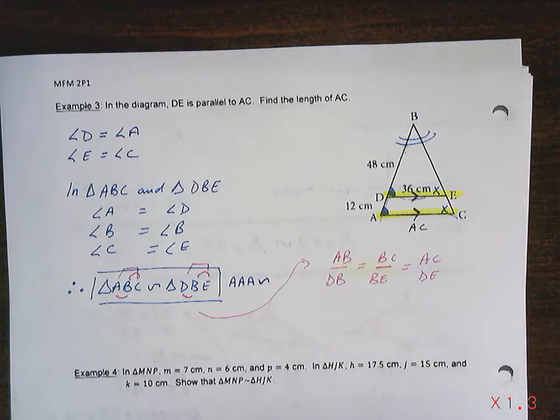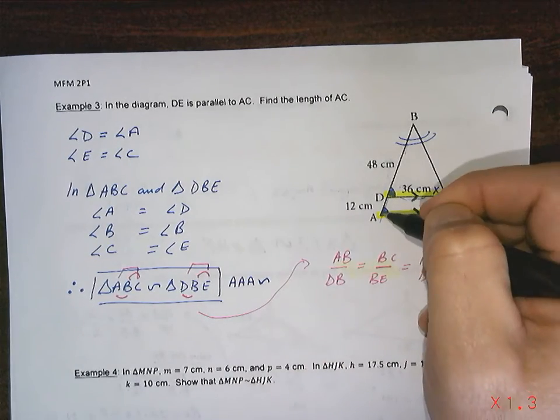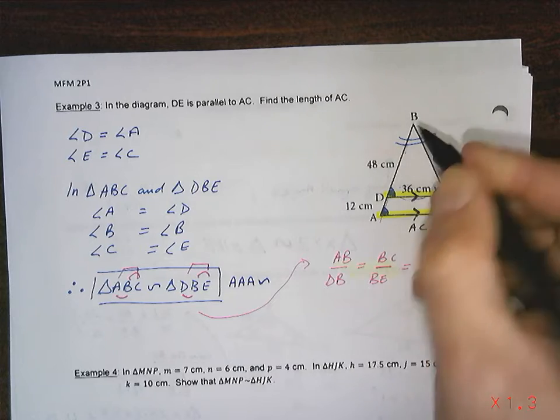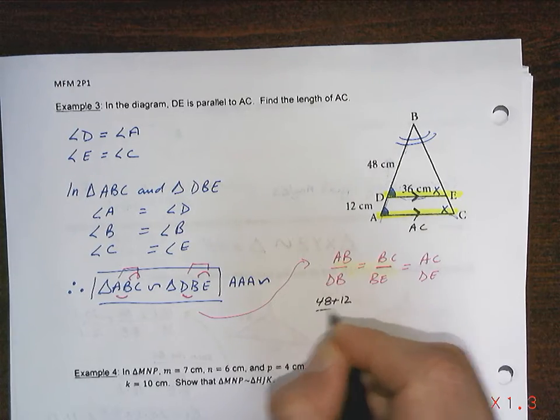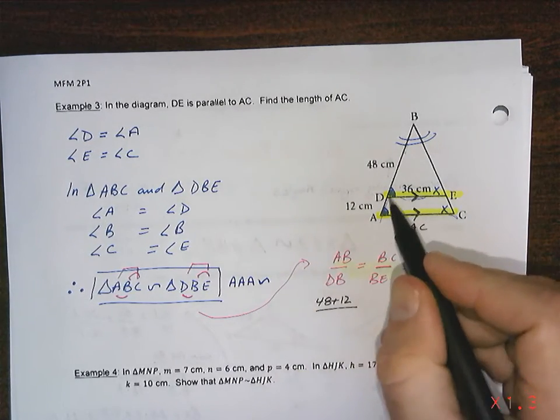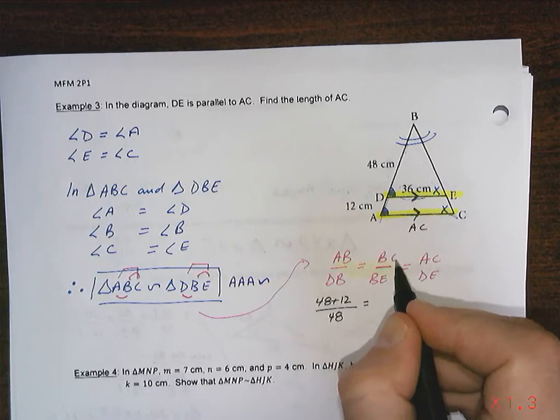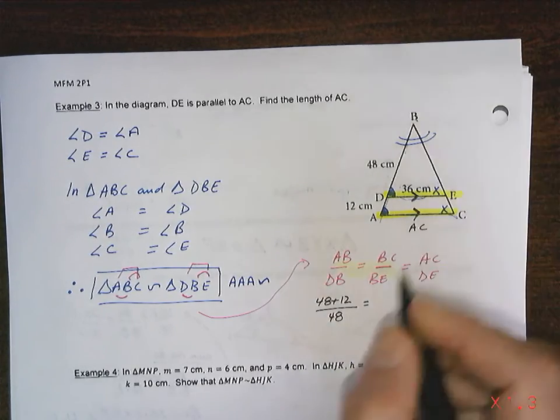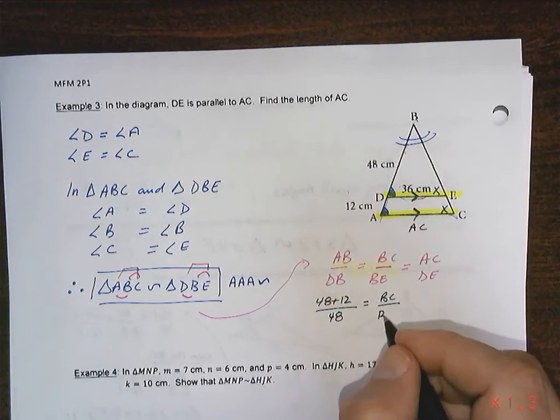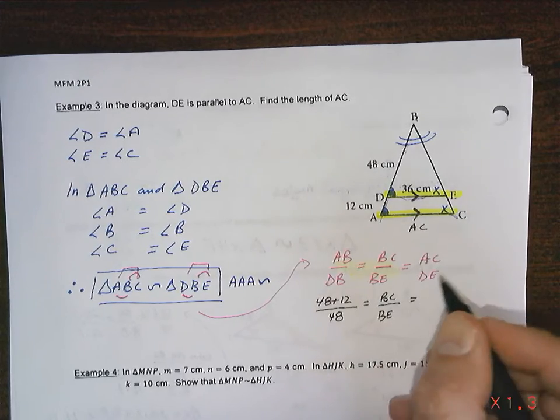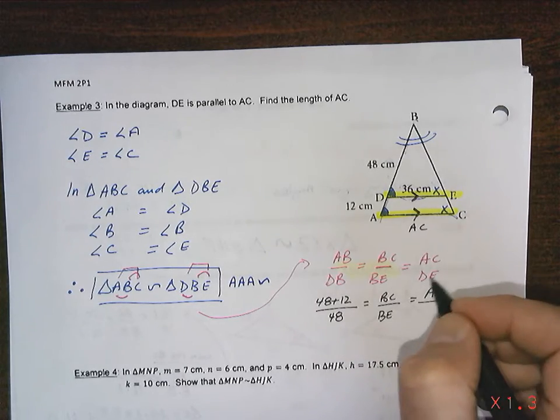Okay, who cares? Well, let's put in what we know. AB, this length here is going to be 48 plus 12. DB is just going to be 48. BC, I don't know that. BE, I don't know that. AC, that's what I want to find. DE is 36.